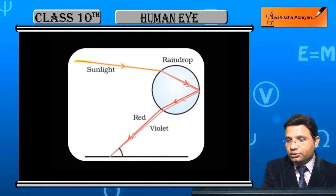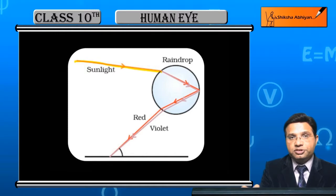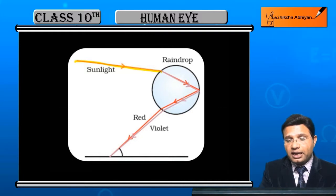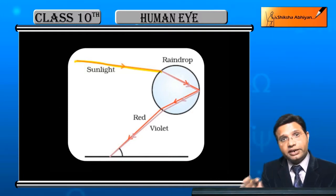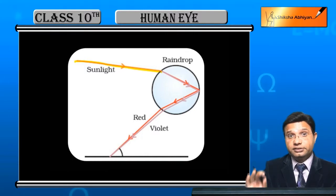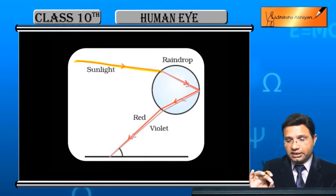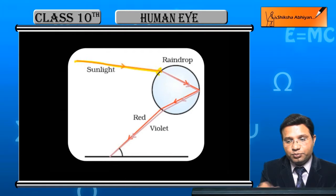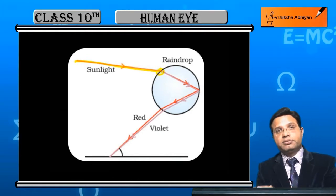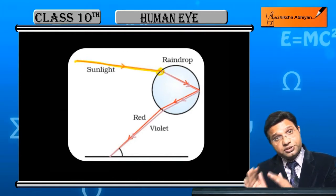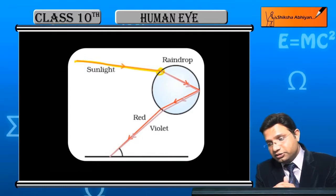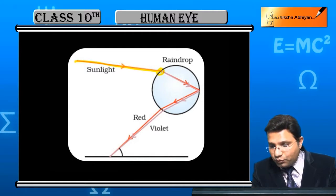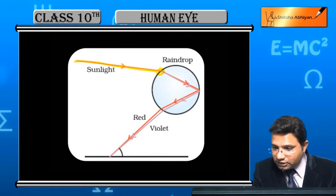This is sunlight incident on the raindrop. The light refracts and disperses into seven colors — the two main colors being red and violet — at this first surface of the raindrop.